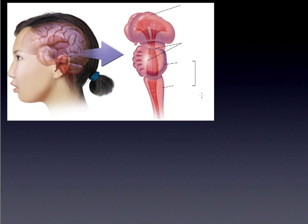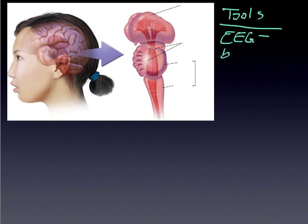I'm going to briefly mention — it's explained more fully in your book — a few of the tools we often use in examining the brain. The first one is EEG, electroencephalogram, and it measures brain waves just under the skull. When we talk about sleep, we will be able to look at what is going on during sleep in these brain waves.